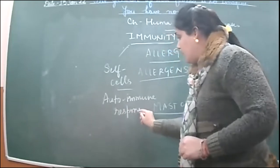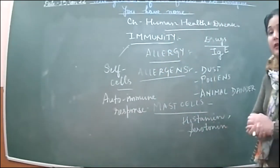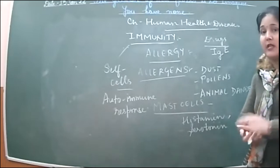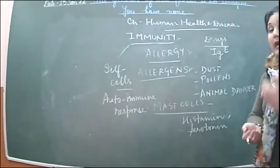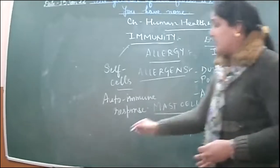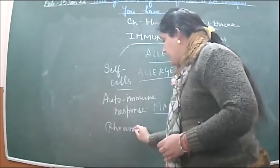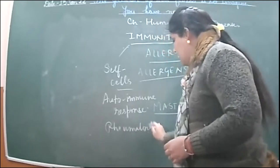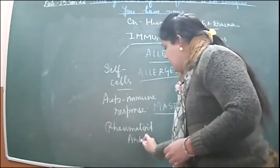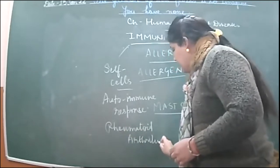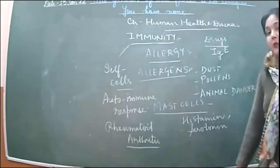If our cells' immunity creates an auto-immune response, what will happen? Our own cells are also damaged. Under this there is a category of disease which is rheumatoid arthritis. This is a disease which is an auto-immune disease. It is related to arthritis — meaning the bone deformities, bones and joints deformities. In the initial stages there is swelling.